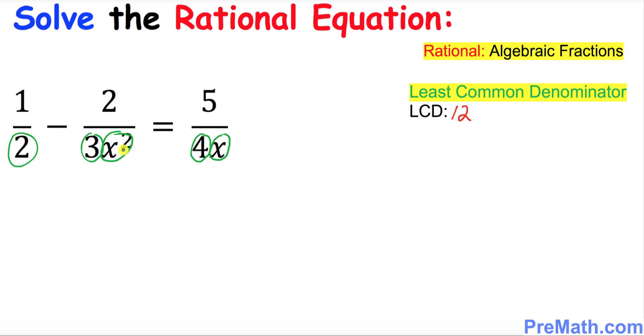I want you to just put down the highest degree over here, so it's gonna be x power 2. So thus 12x power 2 is our LCD. The next step is I want you to multiply this 12x square, the least common denominator, across the board over here.